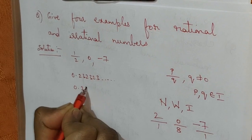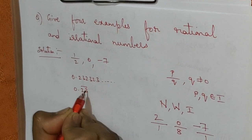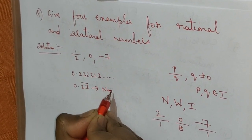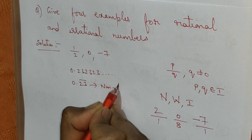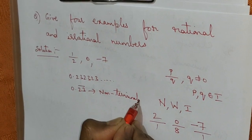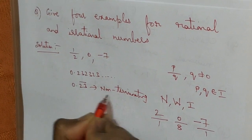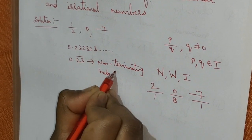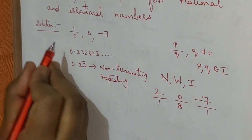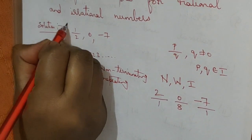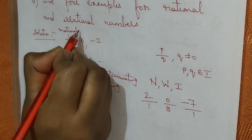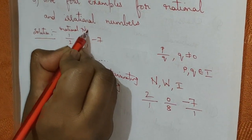0.232323... can be written as 0.23 bar. This is non-terminating and repeating. Non-terminating and repeating decimals are also examples of rational numbers. So all these are examples of rational numbers.